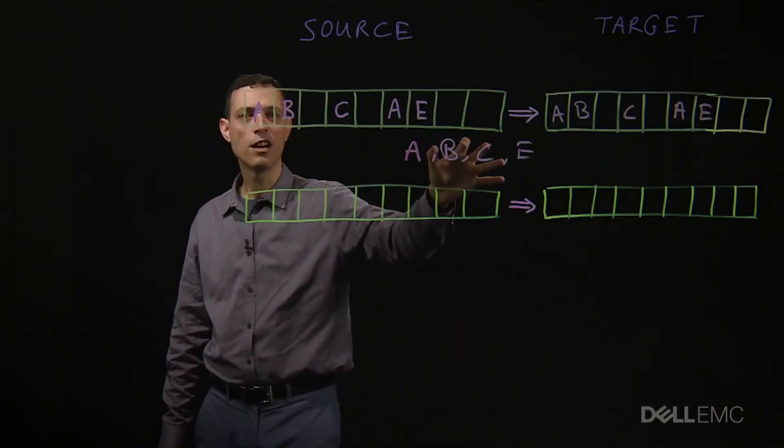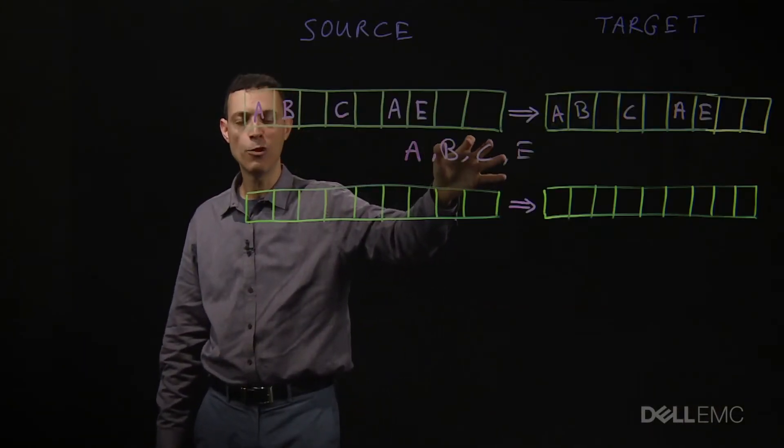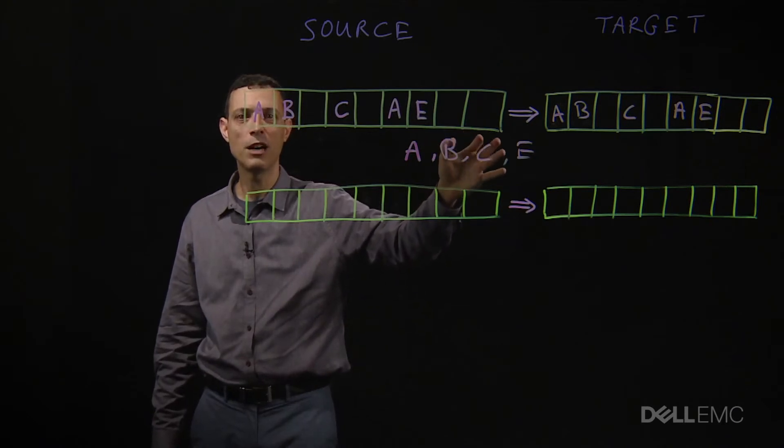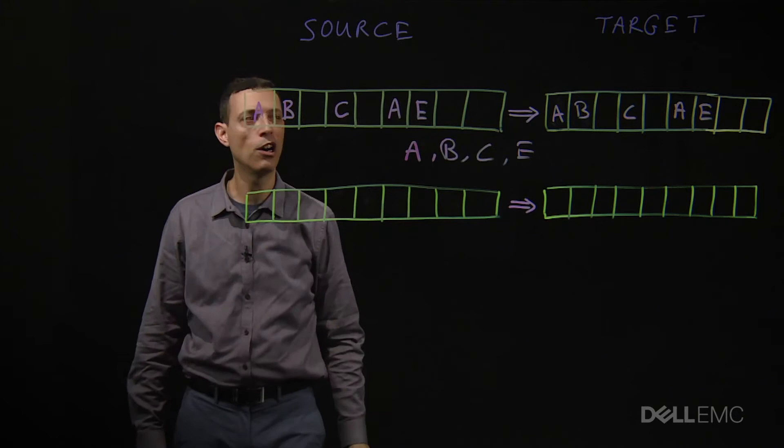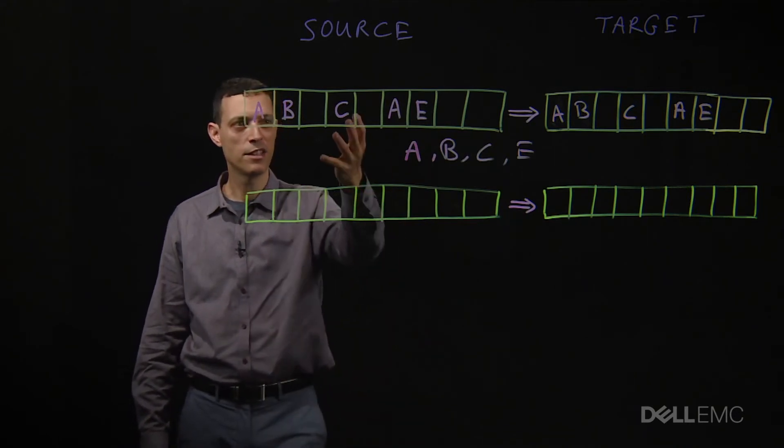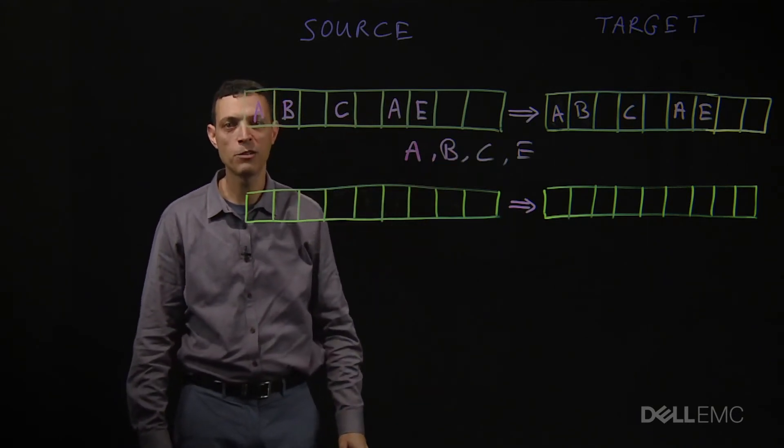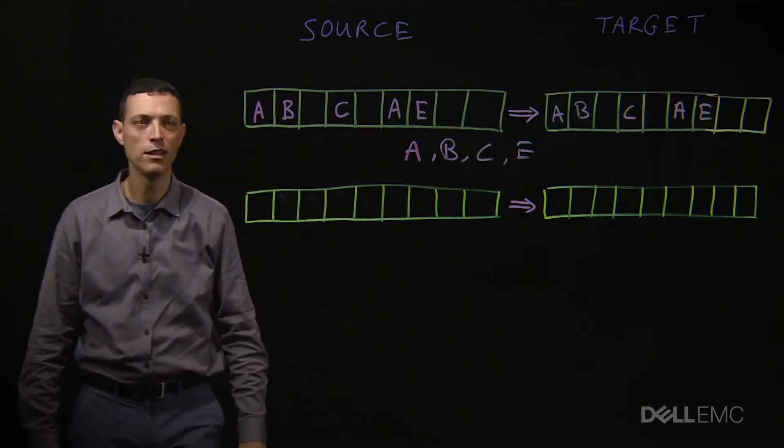Now these four blocks are, of course, transmitted compressed. So with 50% average compression, we can expect to send the equivalent of two blocks over the wire, instead of five. So that's our data reduction in this initial cycle, five to two.